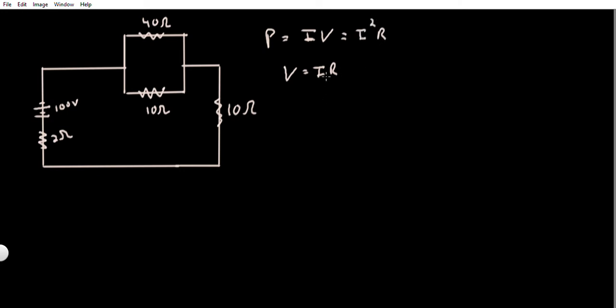Similarly, I can solve for current and find that V over R equals current. I can substitute this current into that current over there and I get V squared divided by R - that's another representation for power.